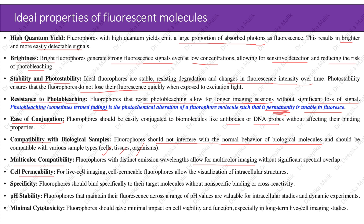Cell permeability: for live cell imaging, cell-permeable fluorophores allow the visualization of intracellular structures. Specificity: fluorophores should bind specifically to their target molecules without non-specific binding or cross-reactivity. pH stability: fluorophores that maintain their fluorescence across a range of pH values are valuable for intracellular studies and dynamic experiments. Minimal cytotoxicity: fluorophores should have minimal impact on cell viability and function, especially in long-term live cell imaging studies.